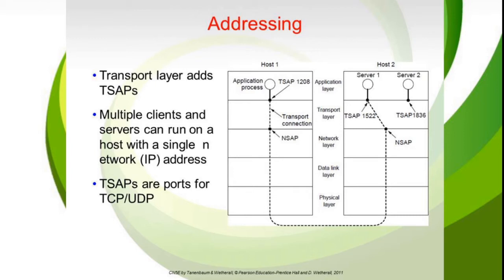When we look into the addressing element, the transport layer focuses on end-to-end transmission. When an application process used by a user wants to set up a connection with a remote application process, it must specify to which process it has to connect. The source and destination have to be explicitly specified, and the transport layer establishes an explicit connection between them — that is why it is called end-to-end transmission.